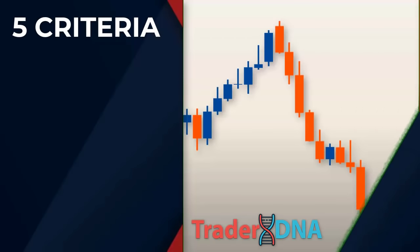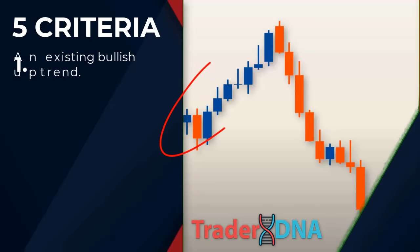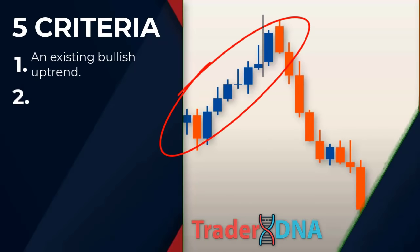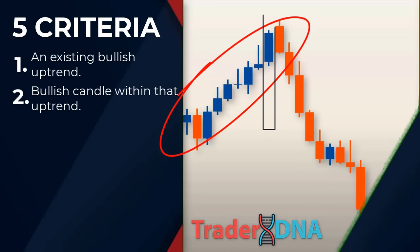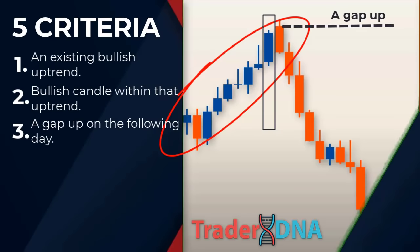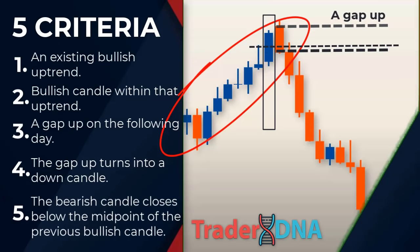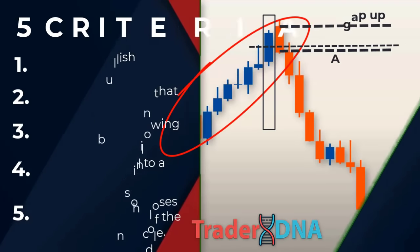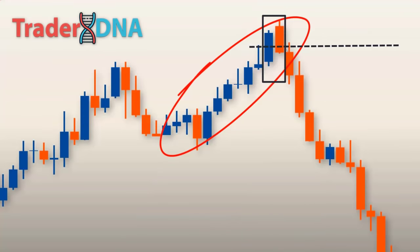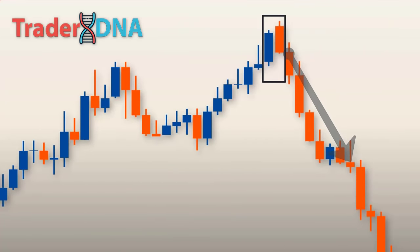The five criteria for the dark cloud cover pattern are: first, an existing bullish uptrend; second, an up or bullish candle within that uptrend; third, a gap up on the following day; fourth, the gap up turns into a down or bearish candle; fifth, the bearish candle closes below the midpoint of the previous bullish candle.